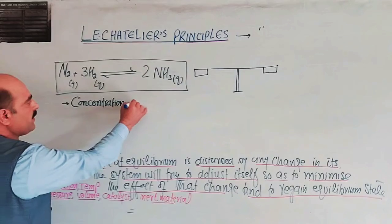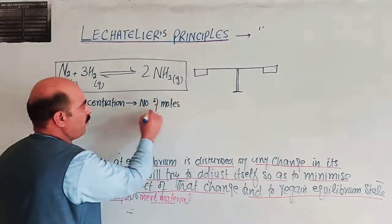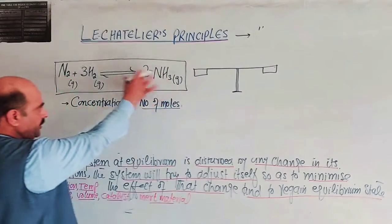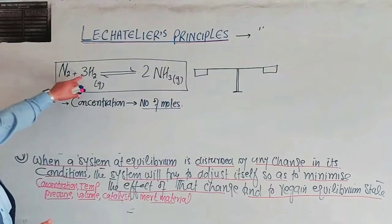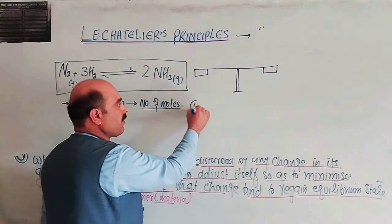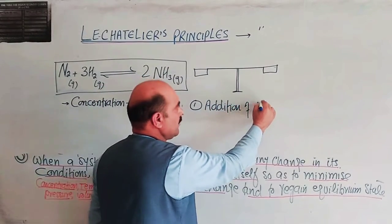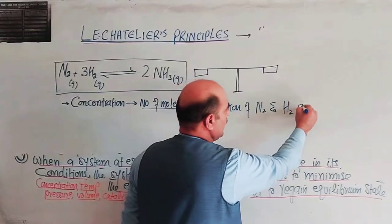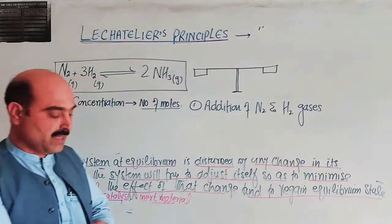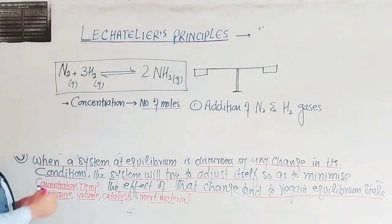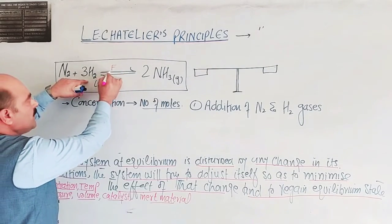Concentration means the number of moles of each reactant and product. For example, consider the addition of nitrogen and hydrogen gases. When the concentration of nitrogen and hydrogen is increased, this automatically speeds up the forward reaction.